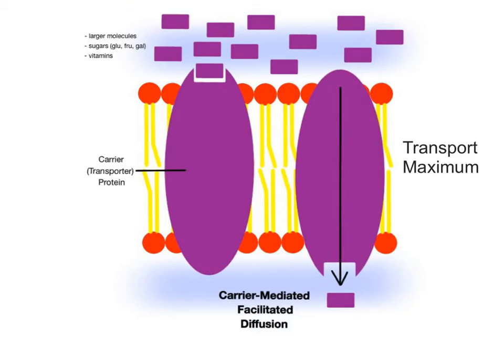When all of the carrier proteins are occupied with solute and engaged in transport, transport is occurring at its fastest rate. This is similar to a sponge that is completely saturated with water. It cannot absorb or hold any more water. When carrier proteins are saturated with solute at their transport maximum, they are working at 100% transport efficiency.